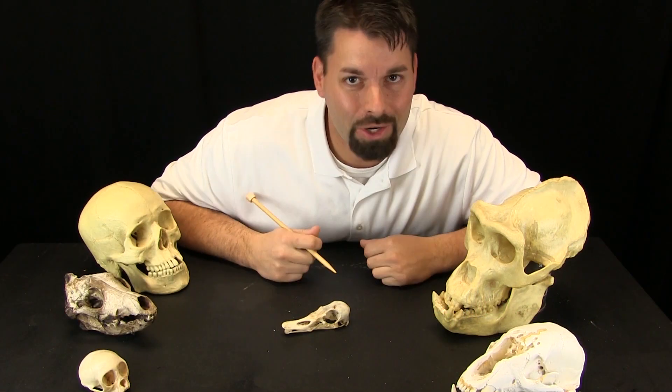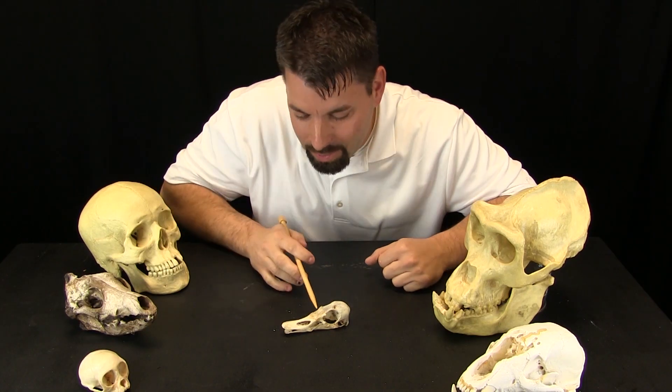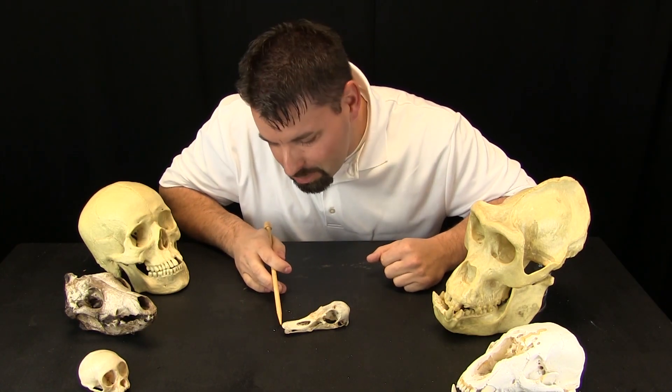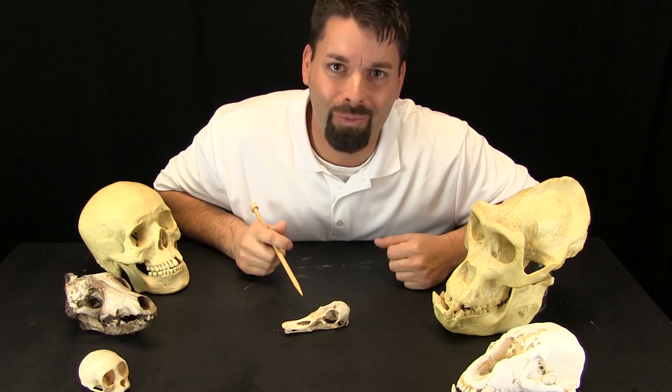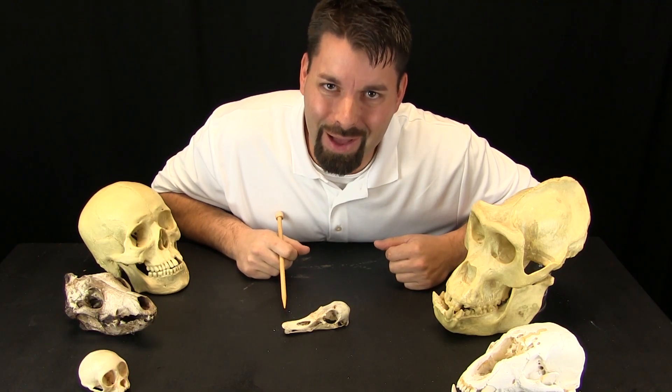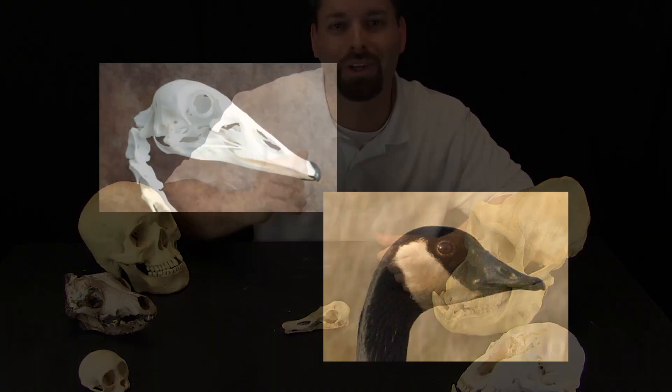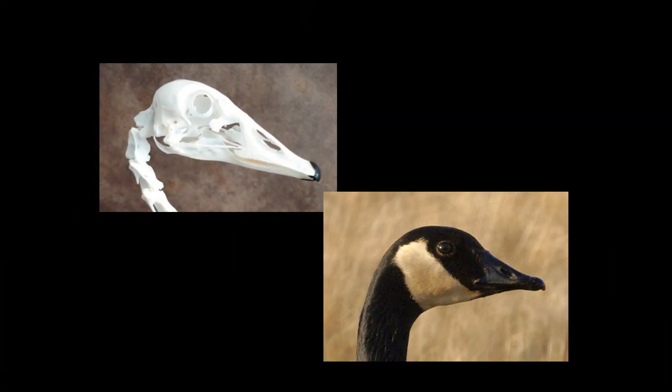Another skull, another animal. What does this skull look like? Well it has this long beak. What animal do you think that is? Take a look at this side by side comparison to find out that this is actually the skull of a goose.